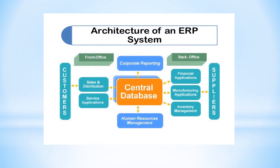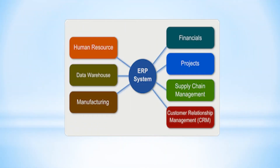Let me show you one more diagram. There is a central database — what is the database? It is a collection of all the data. The central database is the collection of all data, from the customer to the supplier, and it also includes human resource management and corporate reporting. The customer side has sales, distribution, service, and applications. The supplier chain includes financial application, manufacturing, and inventory. All this data will be collected in the central database, with a one-to-one relation. So I hope you understand the architecture of ERP.